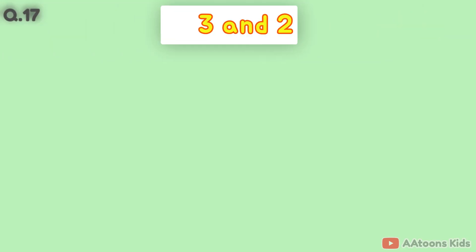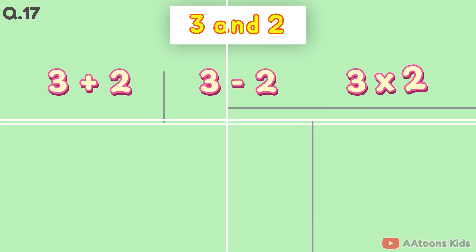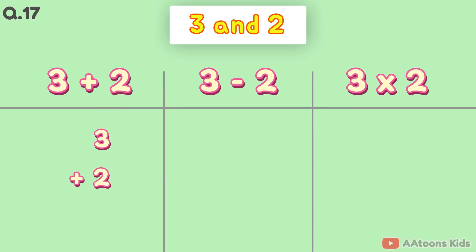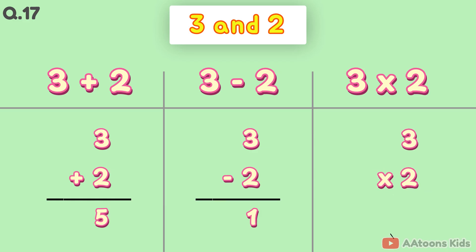The two numbers are 3 and 2. 3 plus 2 is 5. 3 minus 2 is 1. 3 times 2 is 6.